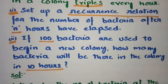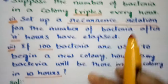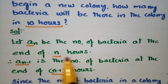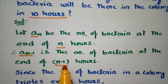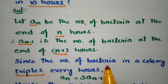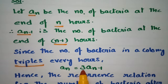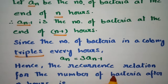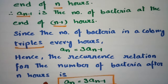The first question is solved — we found the recurrence relation. An is the number of bacteria at the end of n hours and An minus 1 is the number of bacteria at the end of n minus 1 hours. Since the number of bacteria in a colony triples every hour, An equals 3 times An minus 1. This is the recurrence relation for the number of bacteria after n hours.